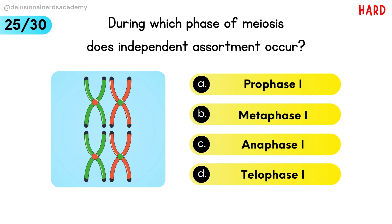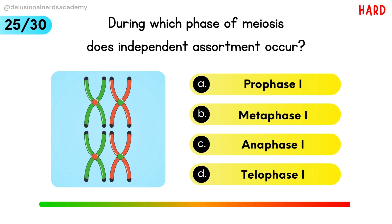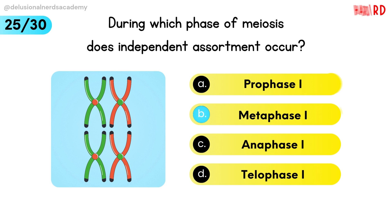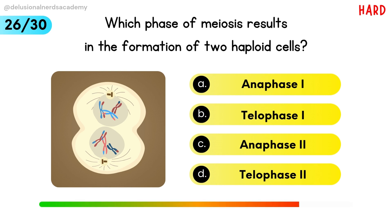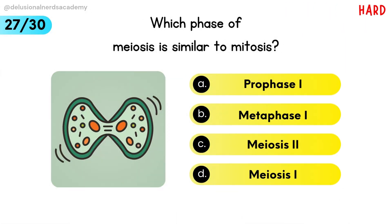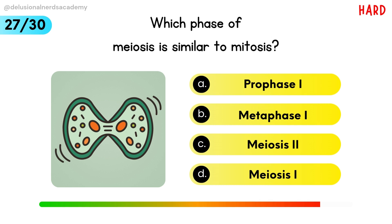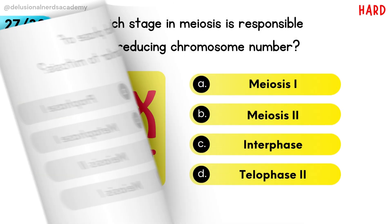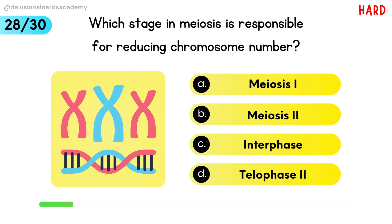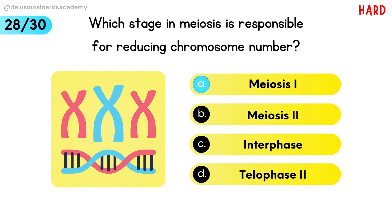During which phase of meiosis does independent assortment occur? Metaphase 1 is the correct option. Which phase of meiosis results in the formation of two haploid cells? Telophase 1 is the answer. Which phase of meiosis is similar to mitosis? Meiosis 2 is similar to mitosis. Which stage in meiosis is responsible for reducing chromosome number? Meiosis 1 is the answer.